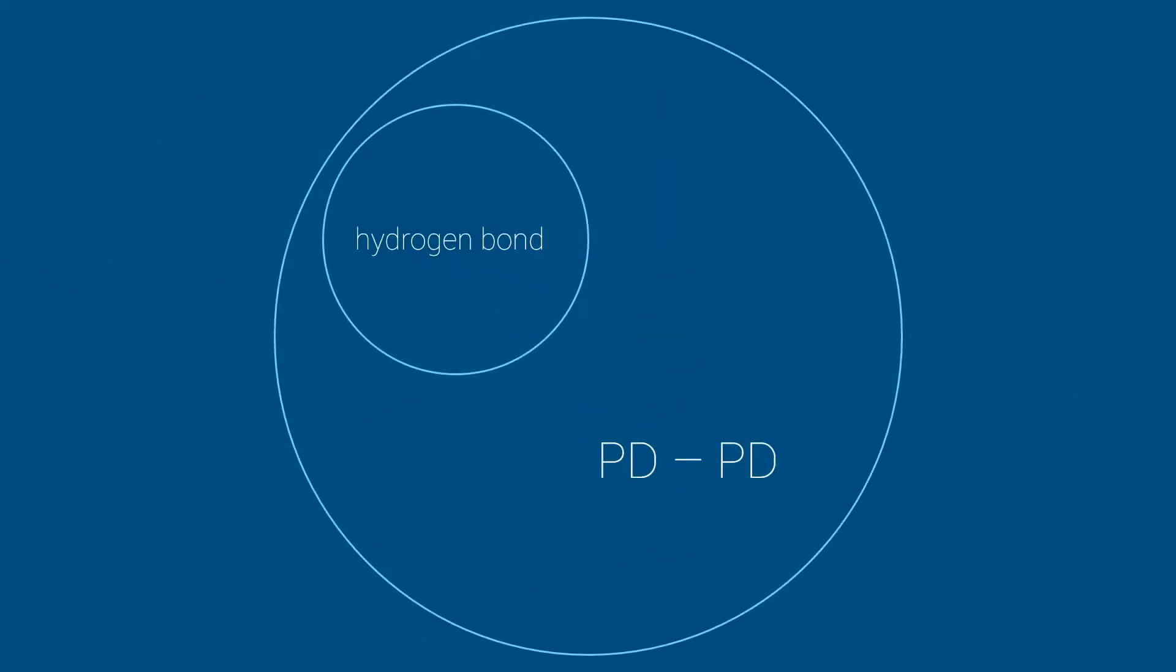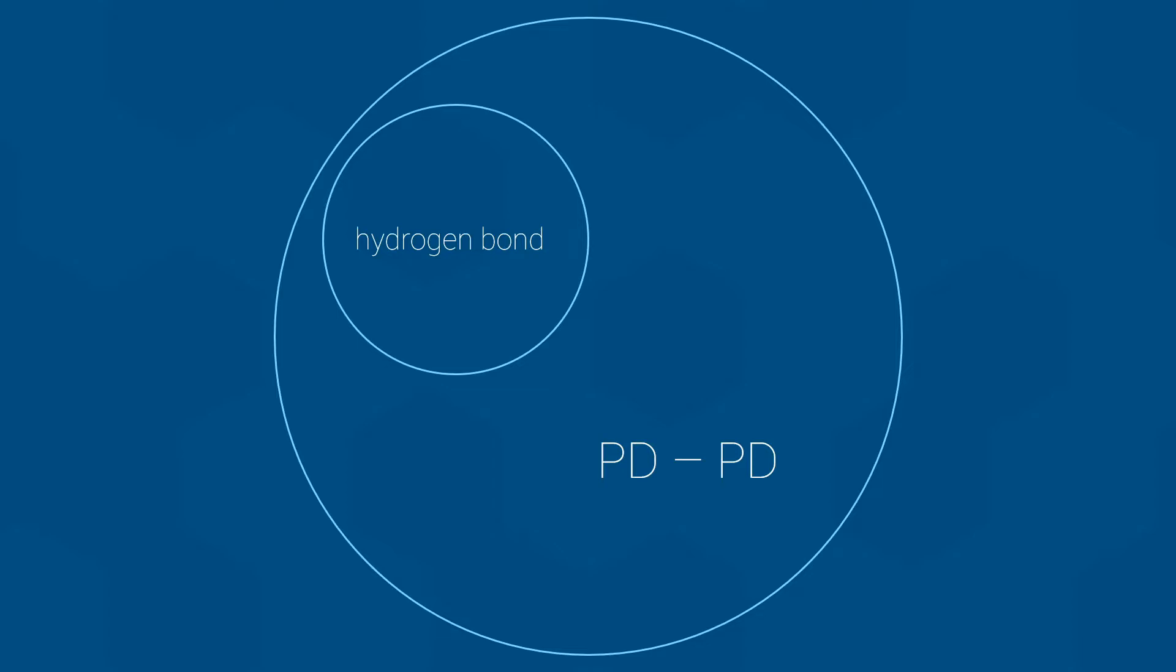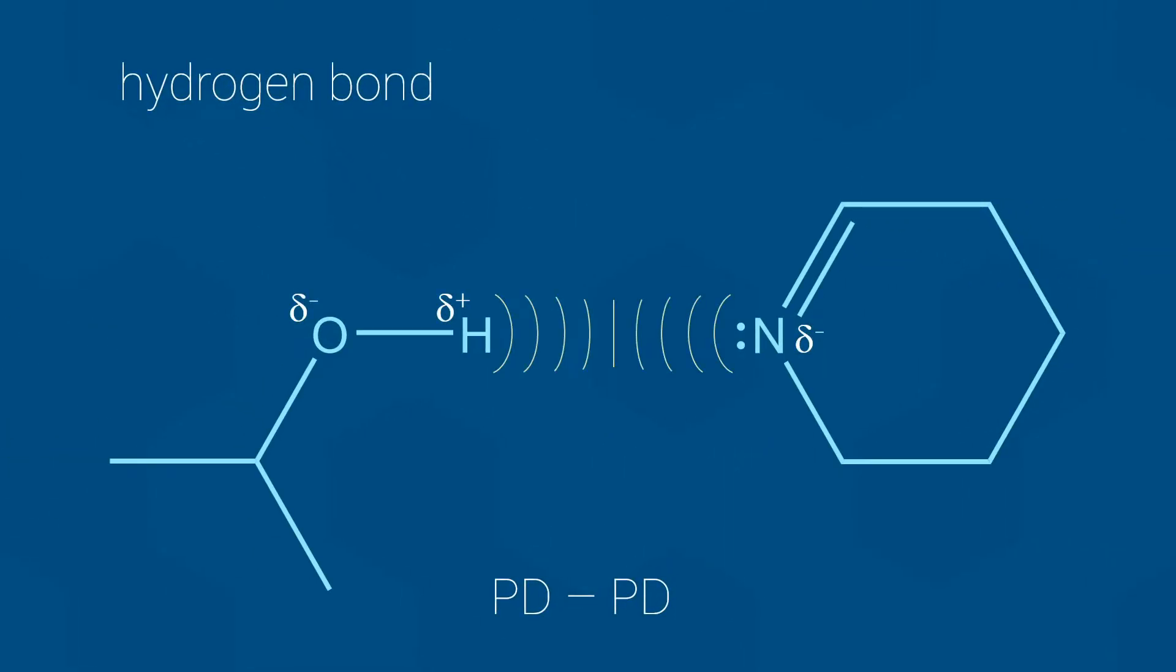Hydrogen bonds are a subset of permanent dipole interactions, and they have all the hallmarks of a typical permanent dipole to permanent dipole interaction. Both molecules involved have some kind of permanent dipole, and the two molecules are attracted by the interaction of a partial positive on one molecule and a partial negative on the other. Please note that in the structure shown here, I have not included the partial positive charges on the ring structure, but they do exist. So far, this is a typical permanent dipole to permanent dipole interaction.